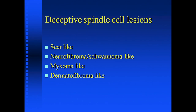Here's group one. This is what I call the deceptive spindle cell lesion group. These lesions can look like a scar, a schwannoma, a neurofibroma, a myxoma, even a dermatofibroma.